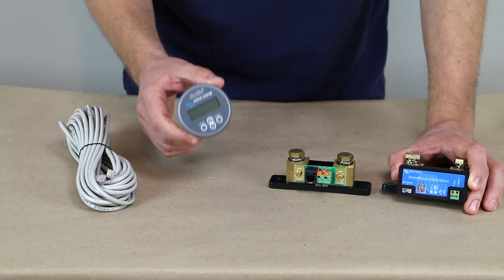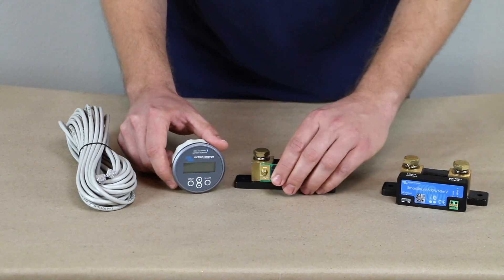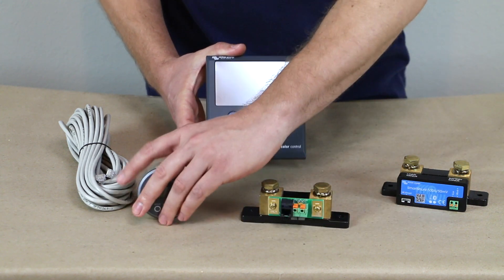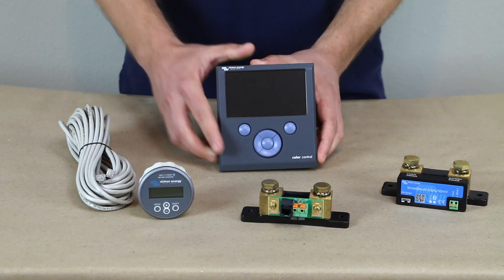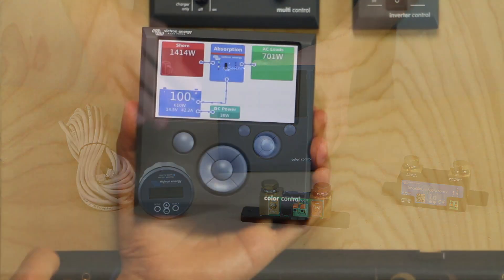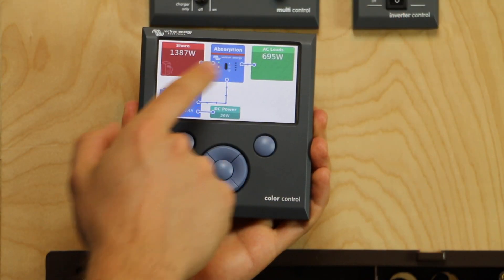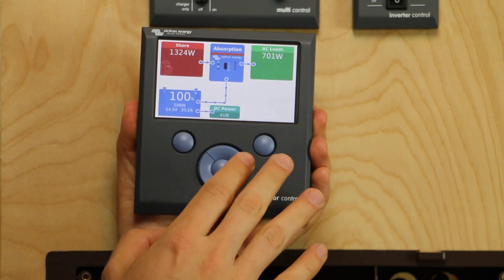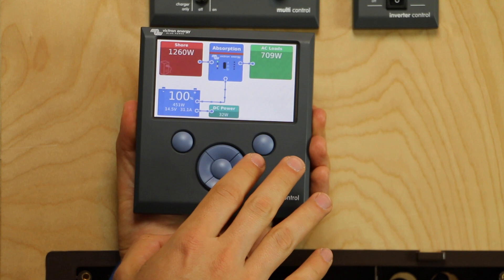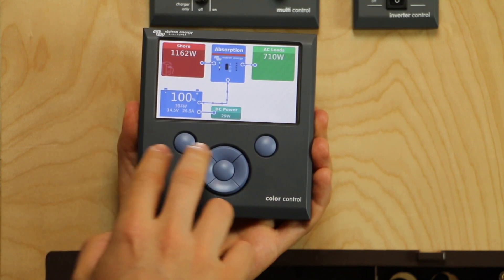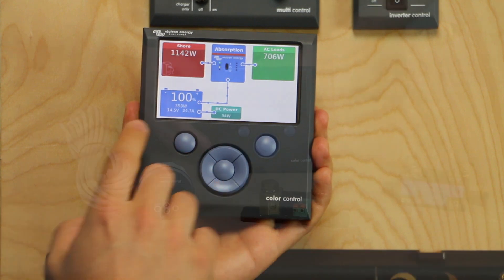And then if we throw in a GX device, this is kind of a wild card, but Victron makes these GX devices that will basically network your solar, your alternator, your shore power, your inverter, everything together and show everything on one screen, show your entire system. And you can see on the bottom left of the GX device is going to be your battery monitor.